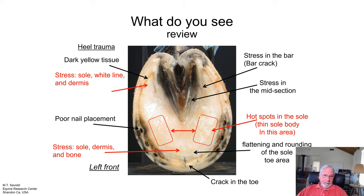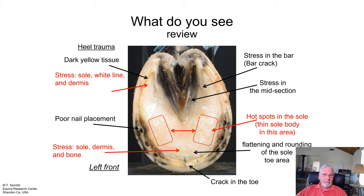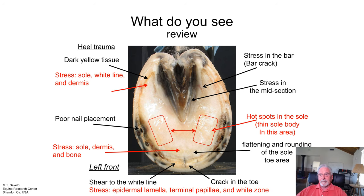There are patterns to toe cracks. When you see a toe crack, look at how the foot's wall length is growing out beyond the sole plane — the wall length most likely will be longer off the sole plane in the toe quarter areas than in the toe area. When you trim the toe short and leave heel, that affects the regrowth of your wall: the toe quarters will get longer than your toe. Shear to the white line is never a good sign — that's stress to the epidermal lamella and terminal papillae in the white zone.